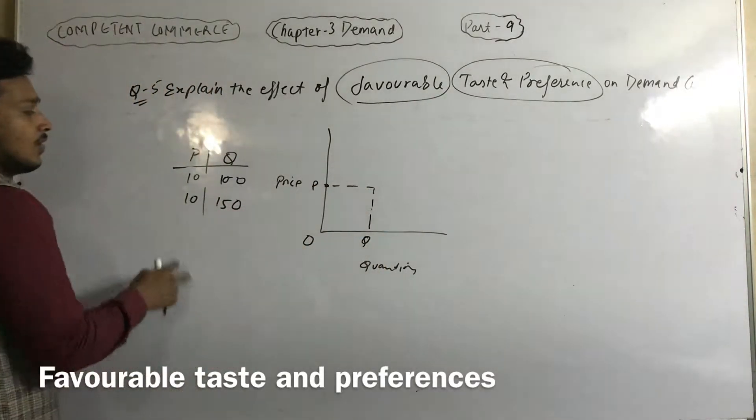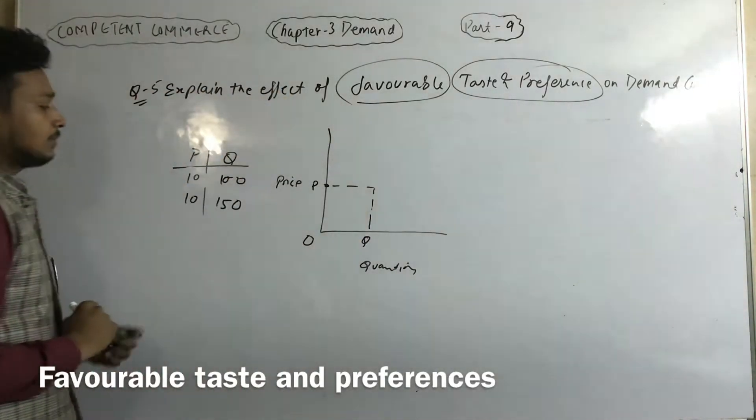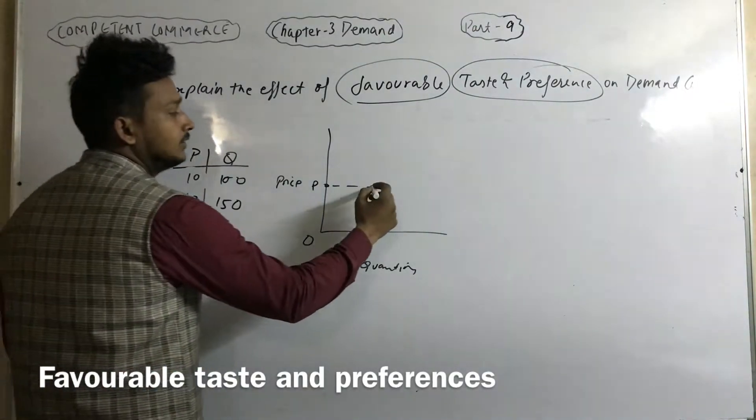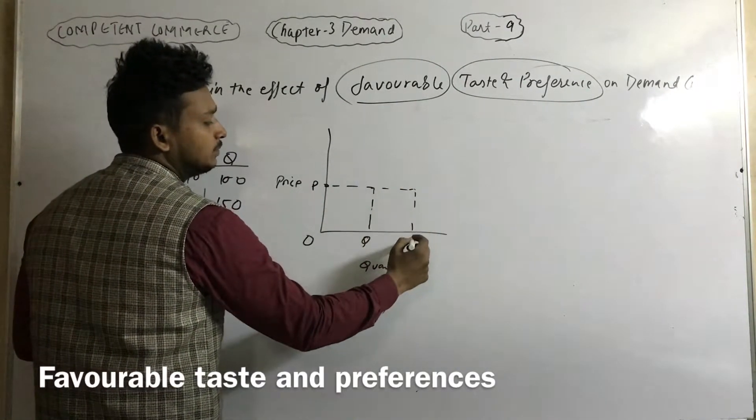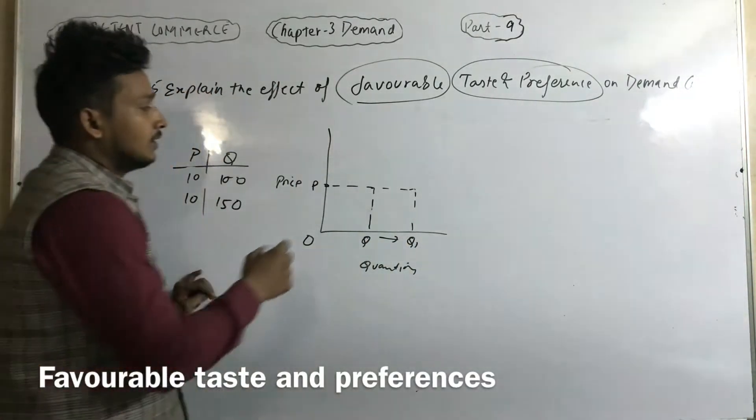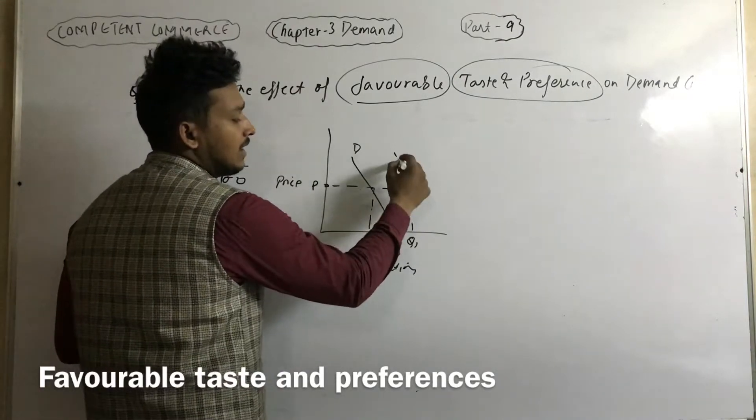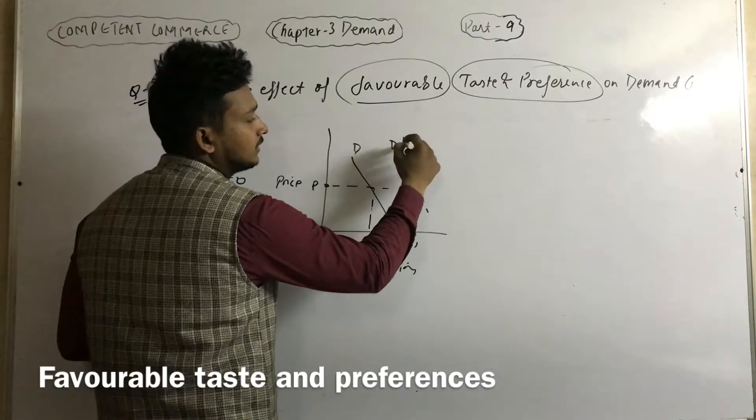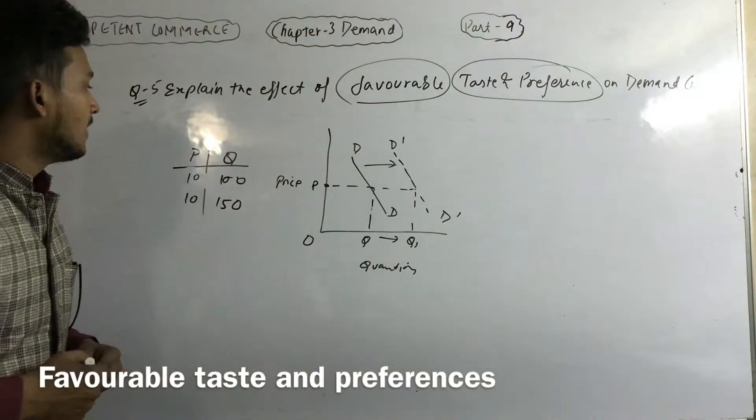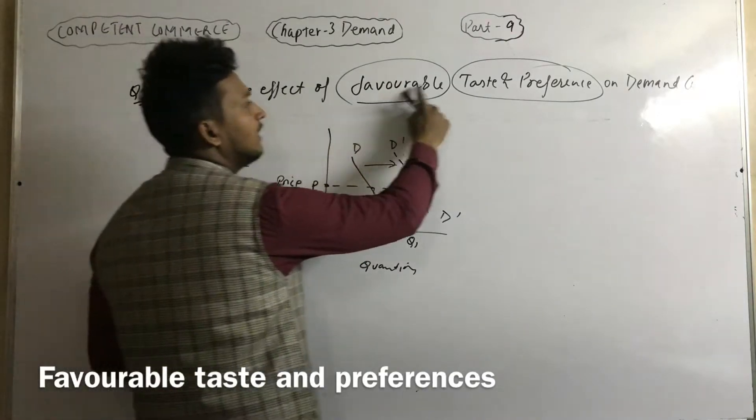The price remains the same. When taste and preference is favorable, now due to favorable taste and preference, demand of the given commodity increases.